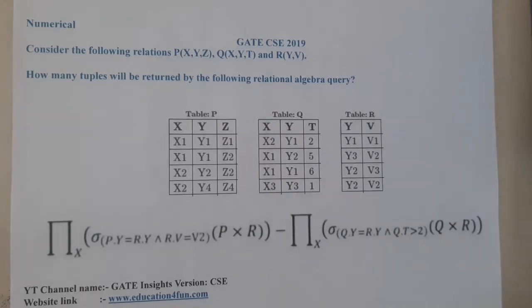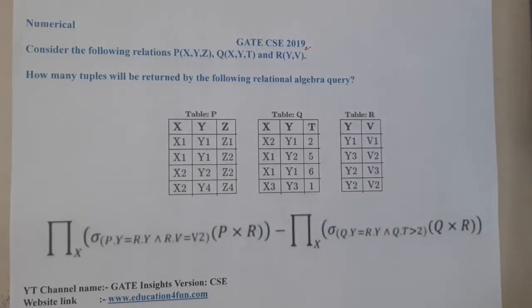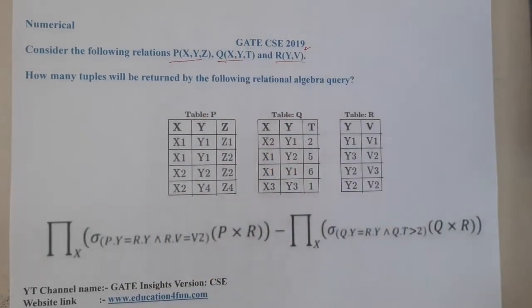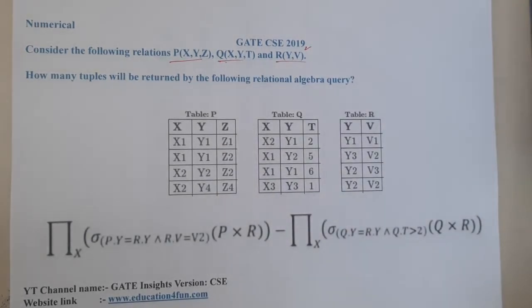Hello guys, you're back with our next lecture. In this lecture, let us continue with the next question. This question belongs to GATE CSE 2019. The given question is: consider a relational table P, Q, and R. How many tuples will be returned by the following relational algebra query?